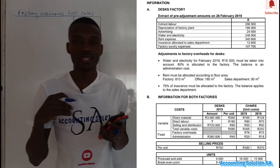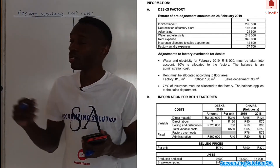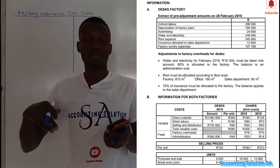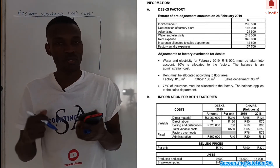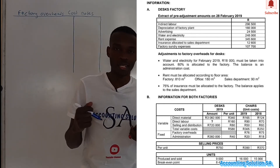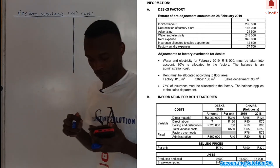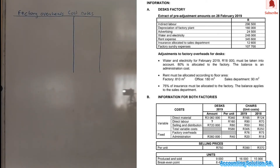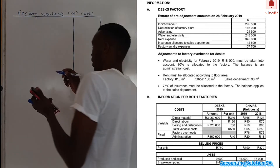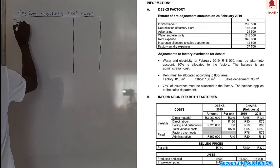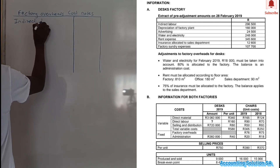Before you start writing the answers, check if there's any effect from the additional information, because you might write the final answer and then find you need to open a bracket for a calculation. Checking the adjustments: number one is water and electricity, number two is rent, number three is insurance — which means there is no effect on indirect labor. So we write indirect labor as it is.